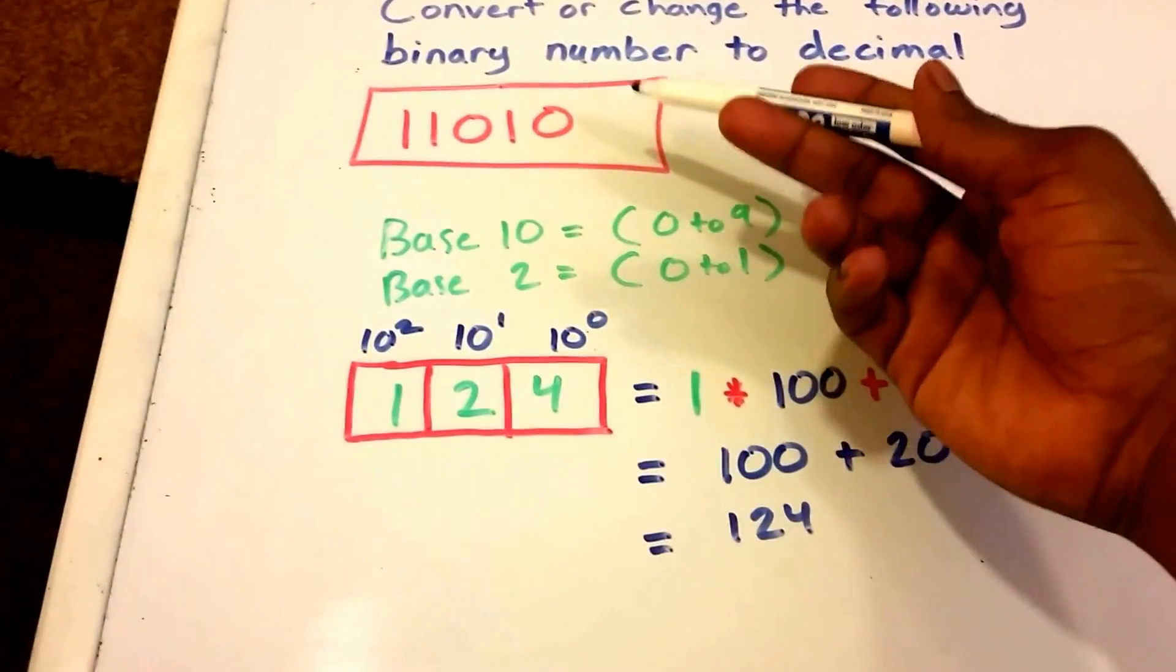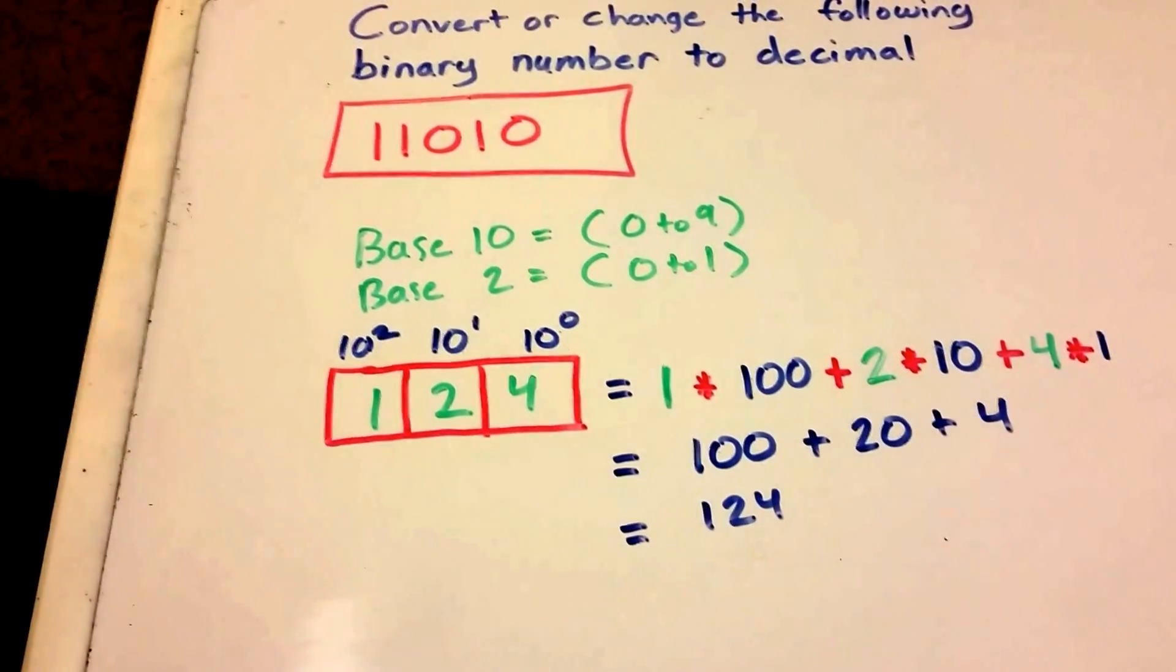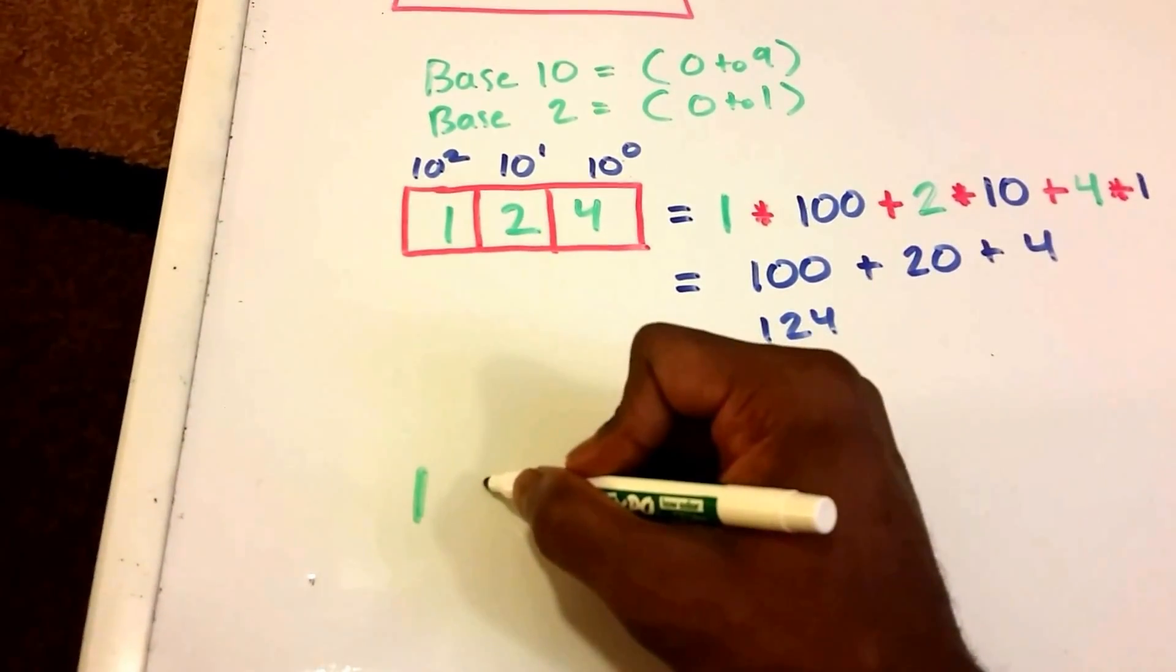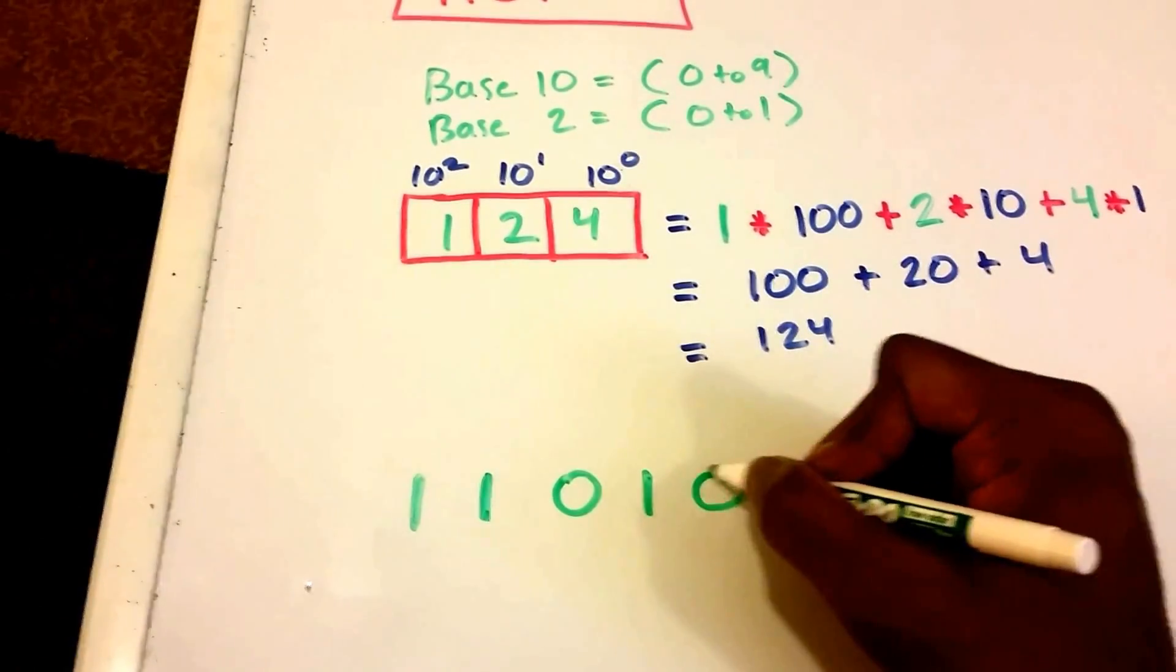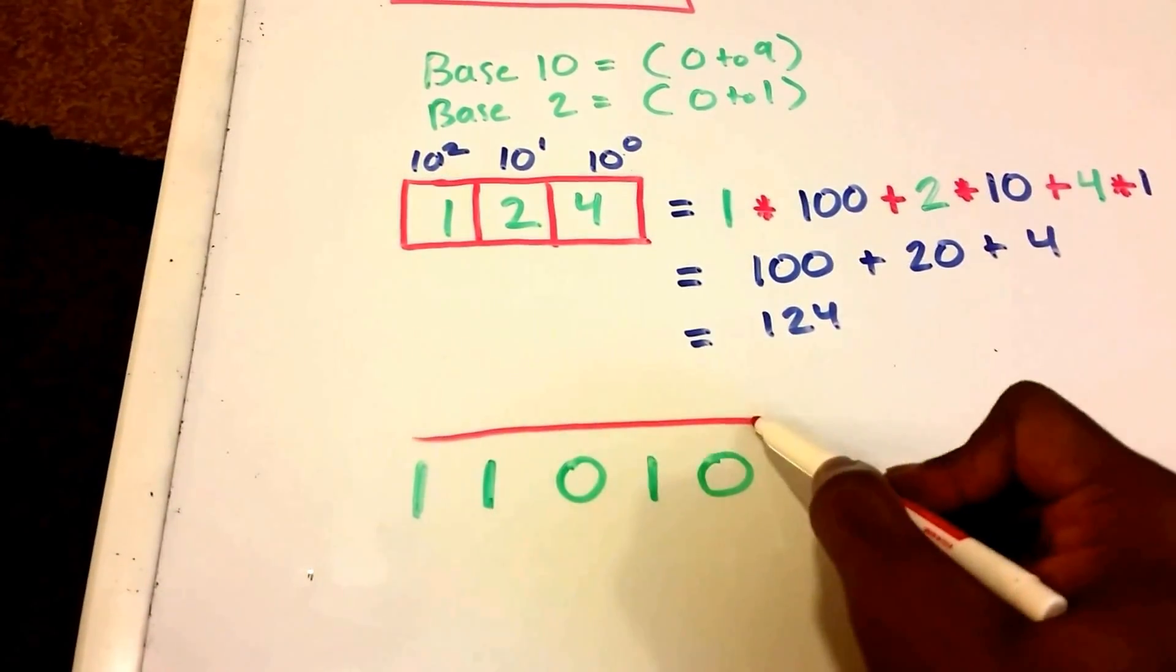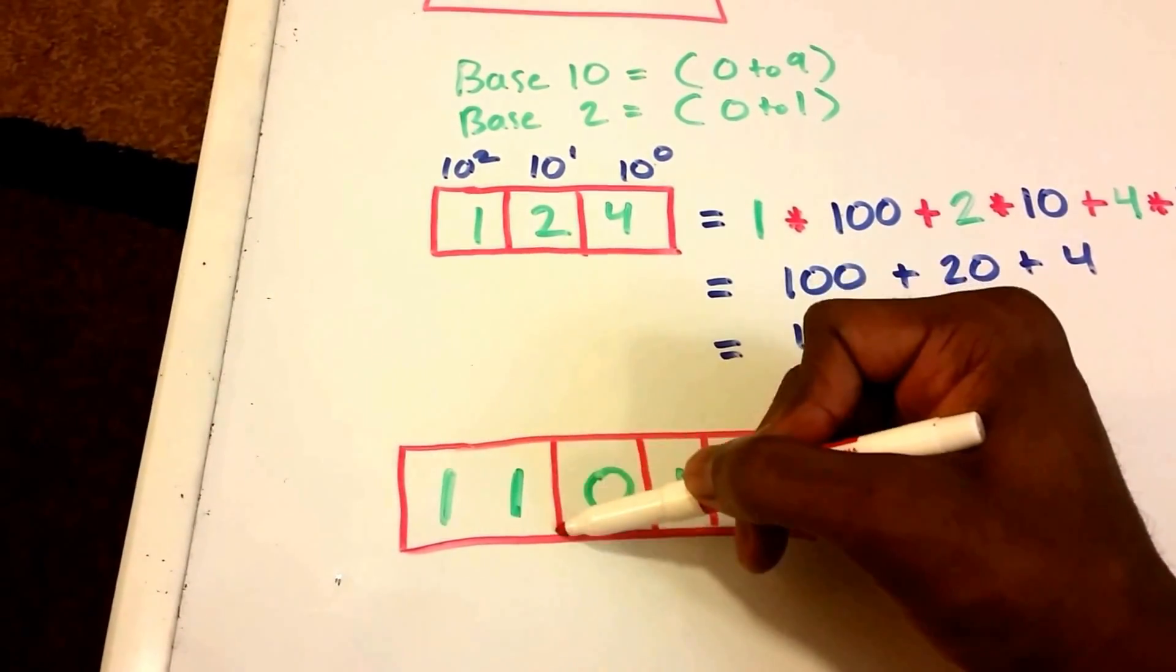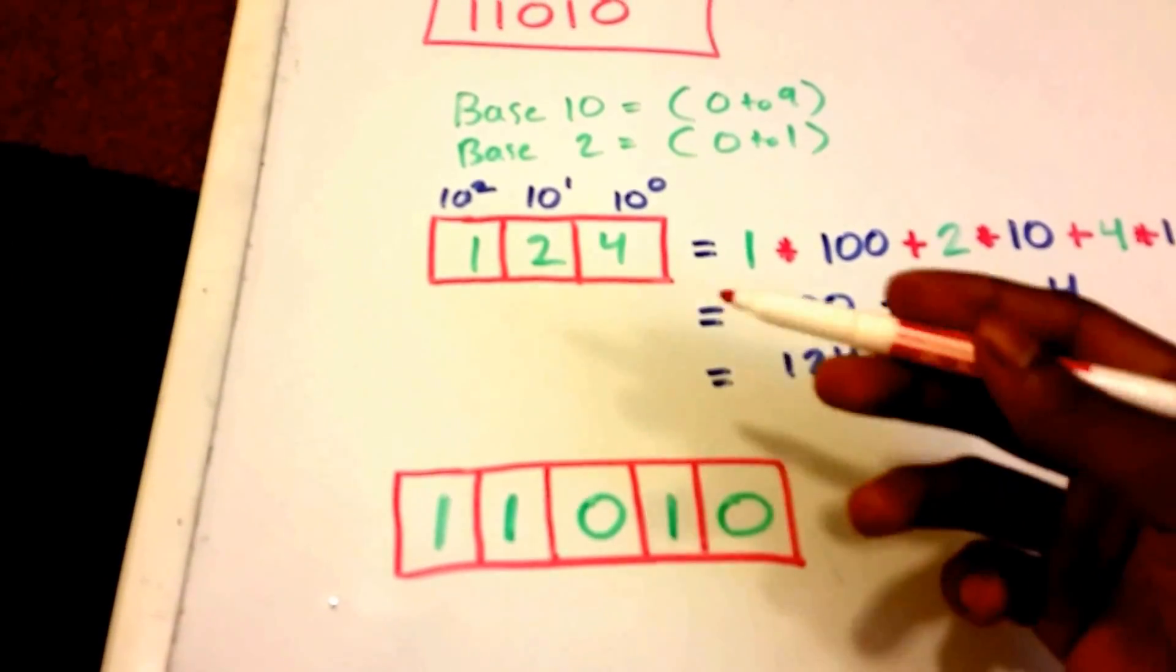Okay, so now that we understand that, this is basically the same concept that we're going to use to convert this binary number into a decimal number. So I'm going to move this up a little bit. Let's get our binary number, which is 11010. All right, and let's create some columns for it. There we go: two columns, three columns, four and five.